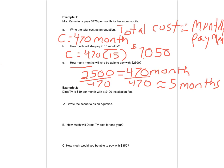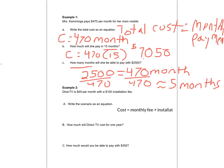DirecTV is $49 per month plus an installation fee. Once again, I would write it out in words first. Cost equals my monthly fee plus my installation fee. Cost equals $49 per month — that's changing, so that needs a variable — plus the $100 installation fee.